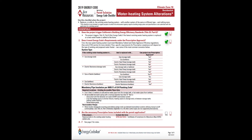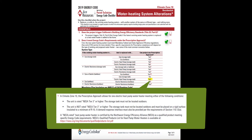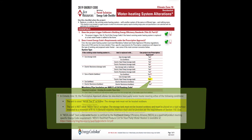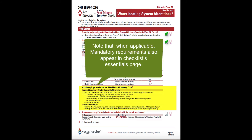A quick consult of footnote C on page 3 shows more information. There are two types of compliant heat pump water heaters under the prescriptive approach, and neither can have its tank located outdoors. When you use your checklists, note that you won't need to read all footnotes, or even most of them — just review any footnotes cited for the specific scenario you are evaluating. When applicable, mandatory requirements can also appear in the checklist's essentials page.